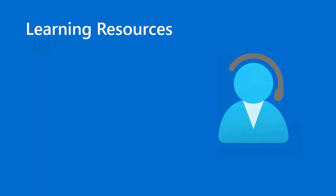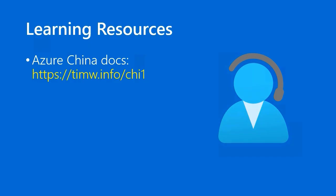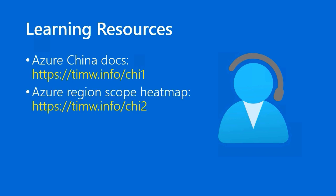For learning resources: first, you can find the Azure China documentation in Microsoft Docs by going to timw.info/CHI1. If you want an Azure region scope heat map, go to timw.info/CHI2, which takes you to azurecharts.com. In the previous lesson's demo, I went to azurecharts.com and showed you where you can compare the Azure product offerings in one region or cloud and compare them to another — for example, comparing what's available in the commercial cloud with what's available in Azure China.